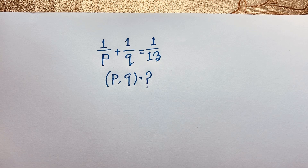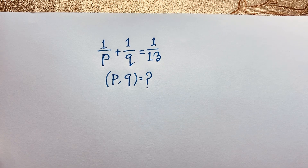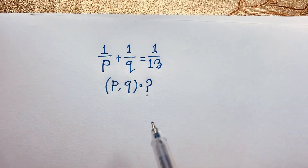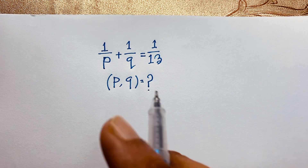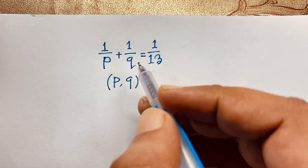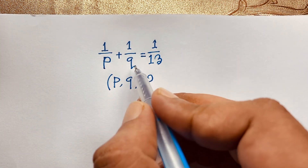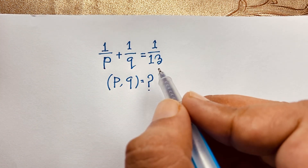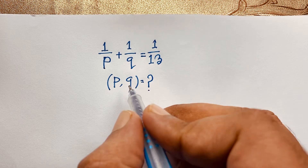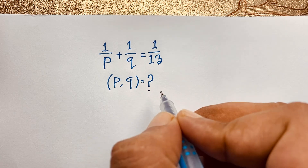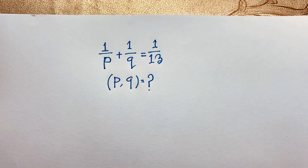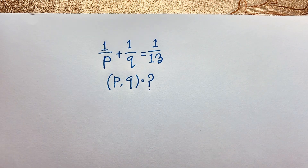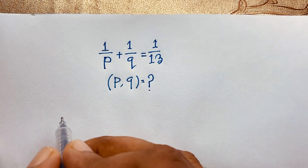Hello everyone, welcome to Rasha's classroom. Today we are solving an interesting algebra problem which is 1 over P plus 1 over Q is equal to 1 over 13. P and Q is equal to what? Here P and Q are positive integers. So how to solve this interesting math olympiad question?